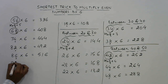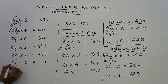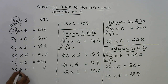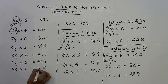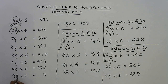94 into 6: ending with 4, half is 47, plus 9 is 56. So 564 is the product. 96 into 6: ending with 6. 98 into 6: ending with 8. Half of 98 is 49, plus 9 is 58. So 588 is the product.